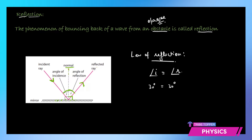What if the ray falls along the normal? If the incident ray falls along the normal, then the angle of incidence is 0, because the angle of incidence is measured with the normal and the ray is already falling along it. So the angle of incidence is 0 and so is the angle of reflection — the ray would just retrace the path back. That is all you need to know about reflection.